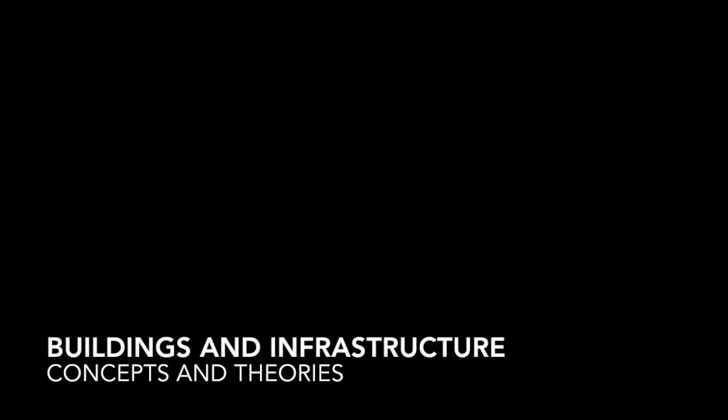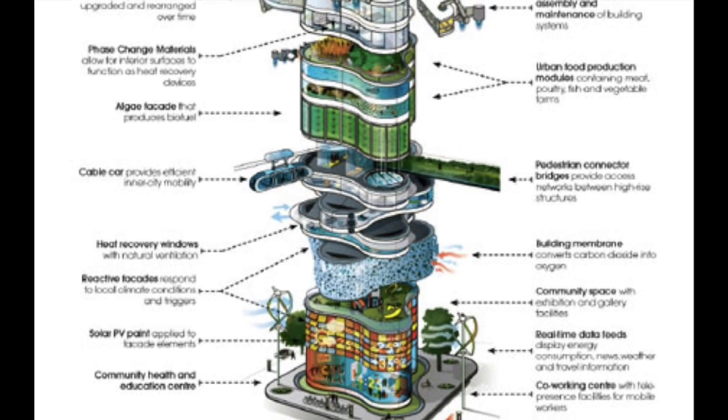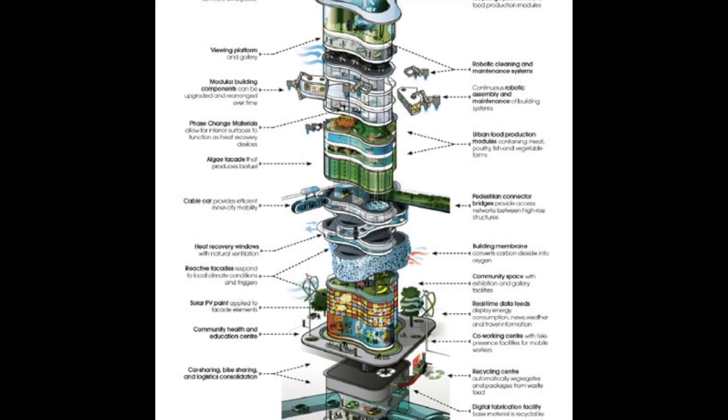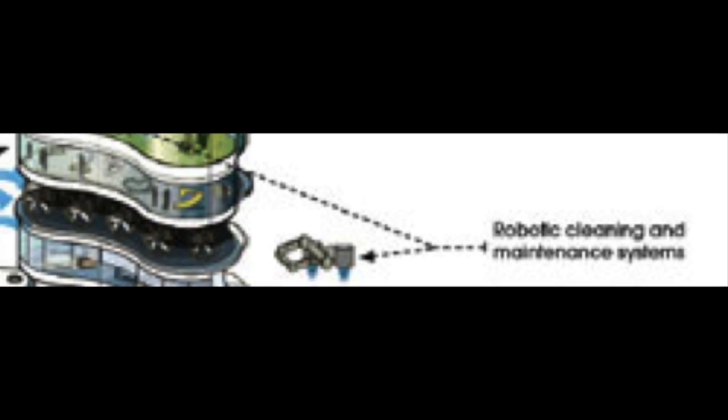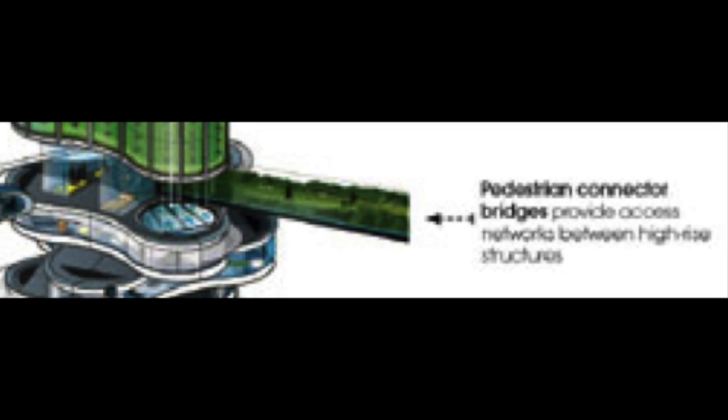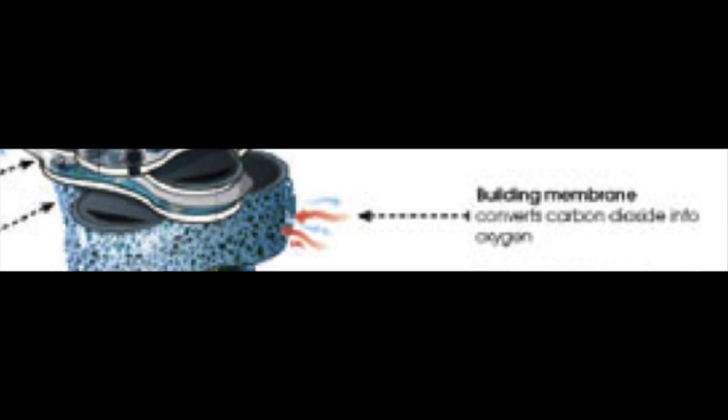The next category is buildings and infrastructure. This is the plan of an average building in the future. I will use a few features from this plan for all my buildings. I will occasionally use the water collection and recycling system on the roof. The roofs will mainly consist of rooftop gardens. I will use robotic cleaning and maintenance systems accompanied by food production robots. The maintenance systems will monitor building conditions and repair any damaged areas. The connector bridges will be used in one section of the city — not for pedestrians, but for transportation parts. Each building will have a building membrane that converts carbon dioxide to oxygen, with an insulation material within the membrane to reduce energy consumption for heating.